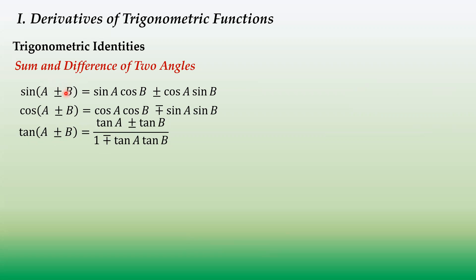To remember the expansions: sine of a plus b equals sine a cosine b plus cosine a sine b — that is, sin, cos, cos, sin. For cosine of a plus b, it is cosine a cosine b minus sine a sine b — cos, cos, sin, sin. For cosine of a minus b, the sign flips to plus: cosine a cosine b plus sine a sine b. For tangent of a plus b, it equals tangent a plus tangent b all over 1 minus tangent a times tangent b.